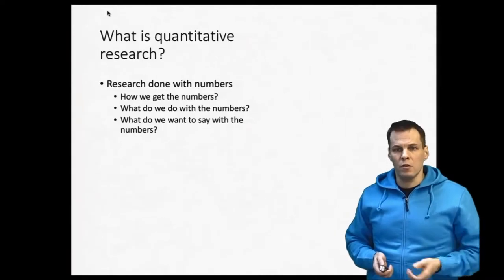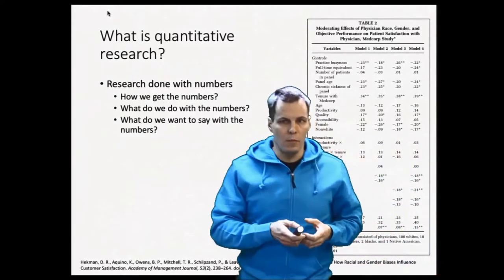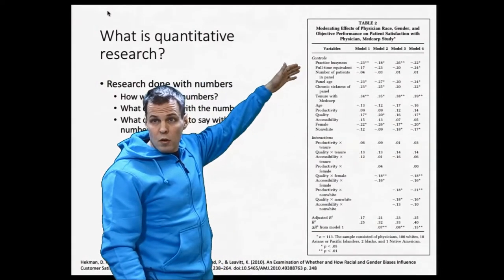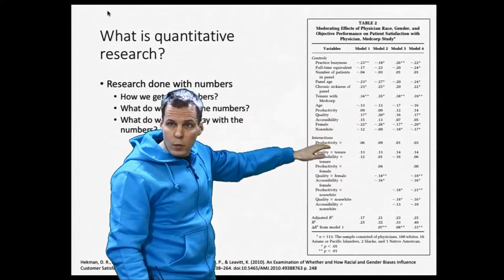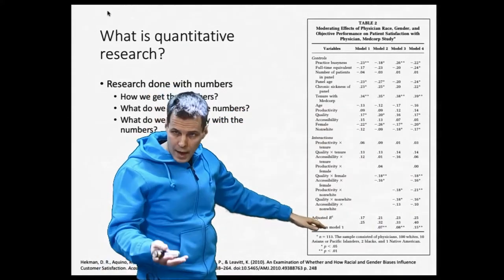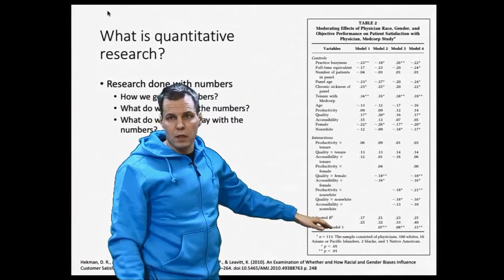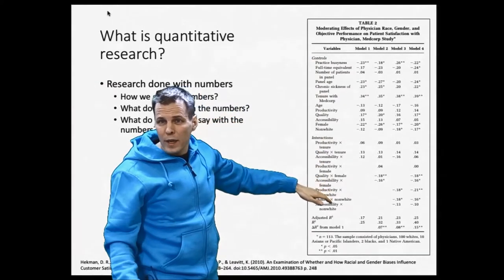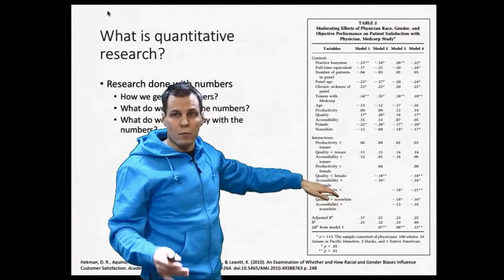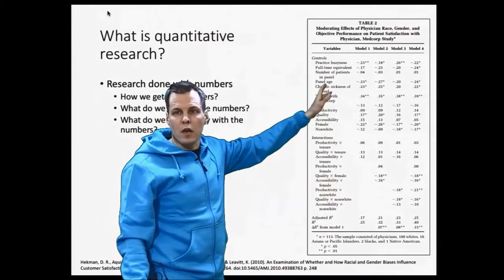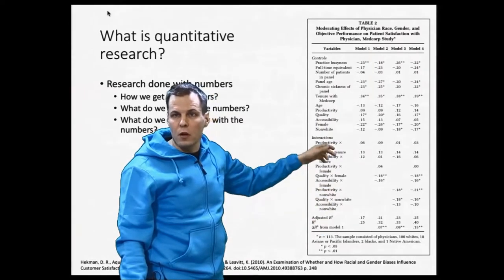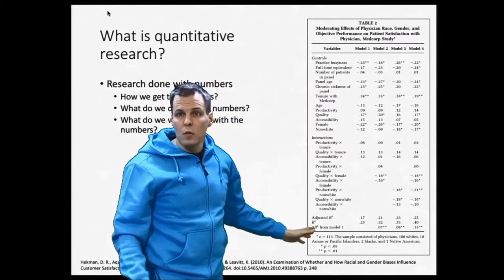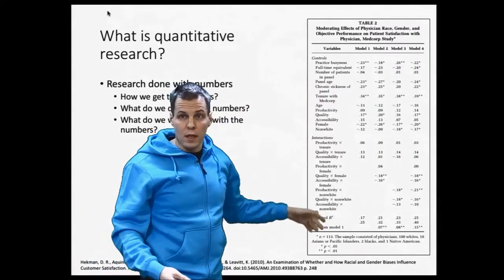So when you see research results such as the regression table here, the three questions here concern what do we want to say with this table. So we have to understand what we can say with the table before we can make any claims. Then what goes to the table with variables, that is about how do we get the numbers and also about what we want to say with the numbers. So it's about research design. And then where the actual numbers in this regression table come from is about what do we do with the numbers.